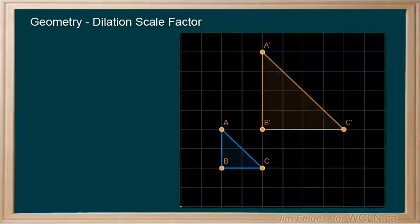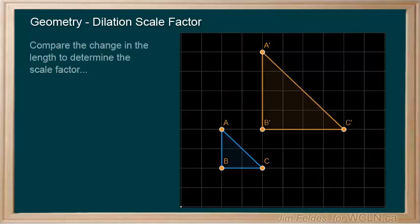We can look at any edge of the object and compare the change in the length to determine the scale factor. Here for example, line AB in blue from our original figure is 2 squares.